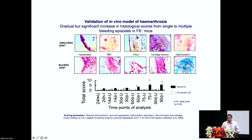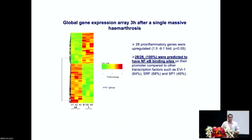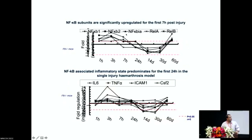We subjected RNA collected from the injured joints to gene expression analysis to understand what is happening at the molecular level. What we identified was that the transcription factor NF-κB — the prime mediator of inflammation and immune response — was upregulated after a single articular bleed. Within the first day, NF-κB and its different subunits, as well as their target genes — the pro-inflammatory cytokines interleukin-6 and TNF-alpha — were substantially upregulated during acute hemarthrosis, which is a single bleeding episode.